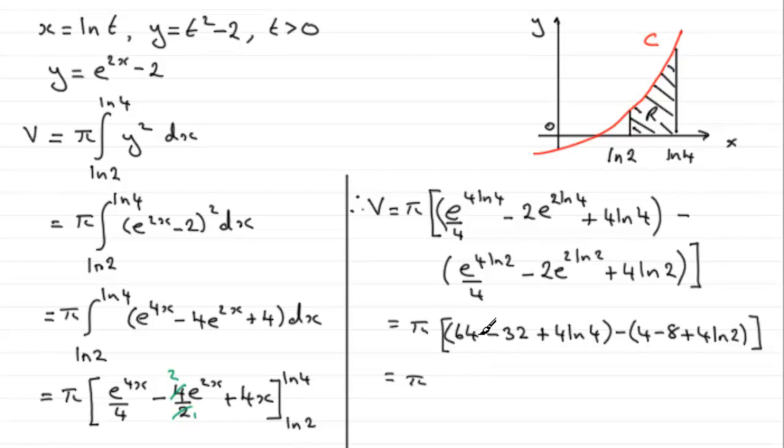So when we group this up we've got pi here, 64 take 32 leaves us with 32, and then you've got here 4 minus 8 is minus 4, minus minus 4 is plus 4, so you've got 32 plus another 4, that's going to be 36. And then when it comes to the natural logs you've got plus 4 times, and you might as well pull 4 out as a common factor here because you've got 4 times the natural log of 4.